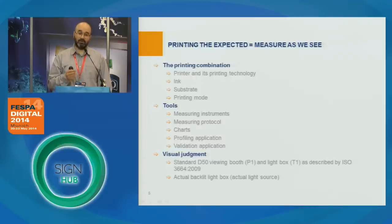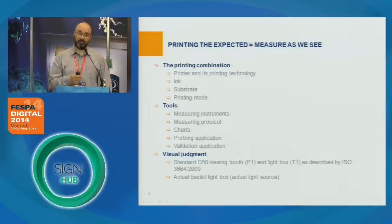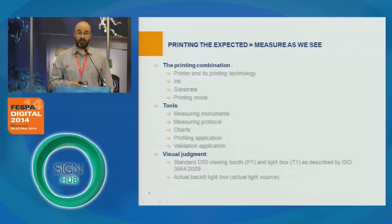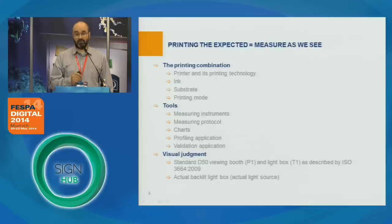We need a 3664-compliant illuminant — either a viewing booth for reflective or a transparency viewer for backlit products. We can actually use even the actual light box, because this is one of the few cases in signage applications where most of the time we will know what the actual viewing environment will be from the point of view of the light.